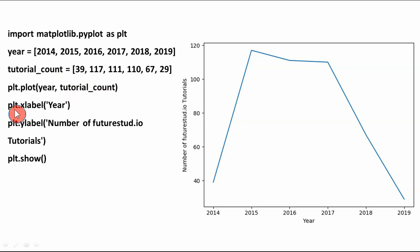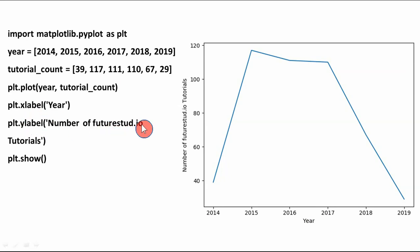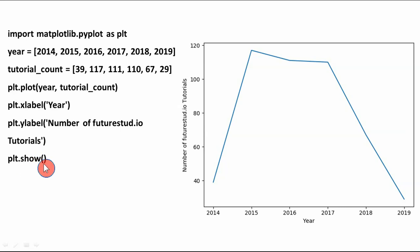Then plt.xlabel is used to set the label of the x-axis, and plt.ylabel is used to label the y-axis — for example, 'Number of FutureStudio.io Tutorials'. Then plt.show is called, which is very important — without it the line graph cannot be displayed on the monitor. The plot function draws the line graph, but show displays it on screen. If you execute these instructions you will get a line graph.